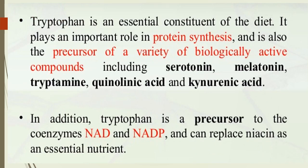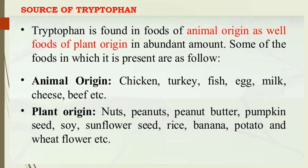Tryptophan is an essential constituent of the diet. It plays a very important role in protein synthesis and biological functions — acting as a precursor for many molecules and pathways, such as the serotonin pathway, melatonin pathway, kynurenic acid pathway, and xanthurenic acid pathway. It is essential for regulation of appetite, mood management, digestion, and production of neurotransmitters, as well as for coenzymes NAD and NADH.